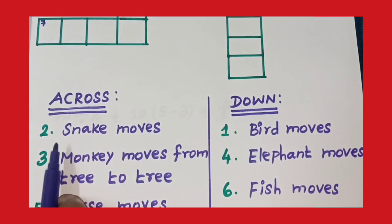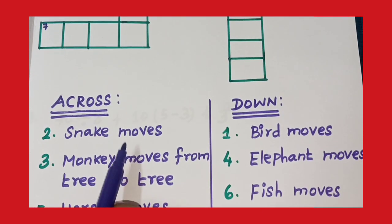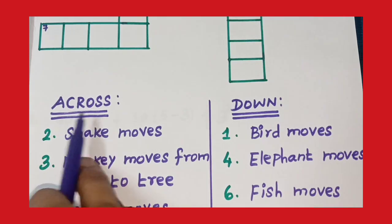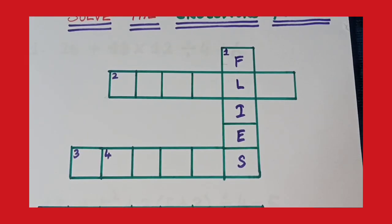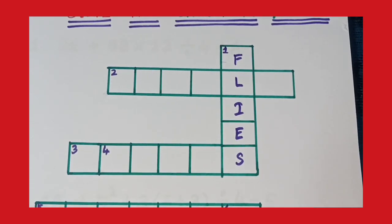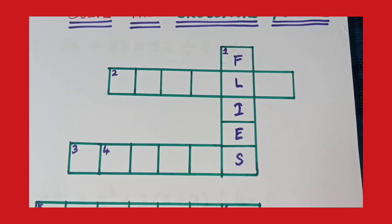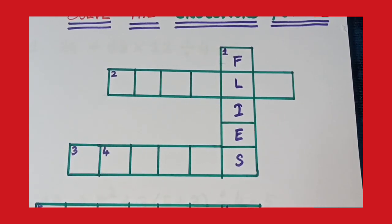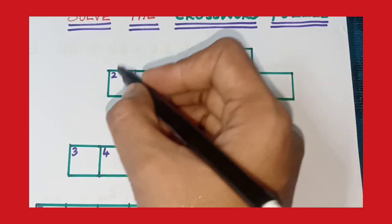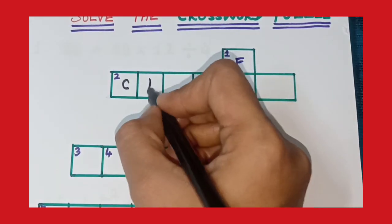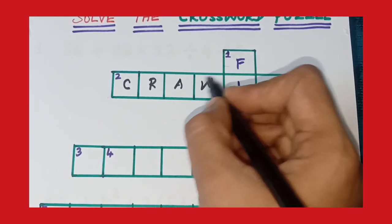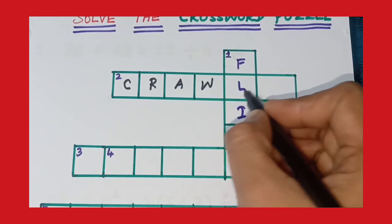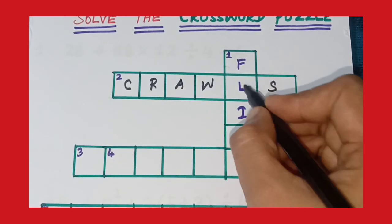Second one, snake moves. The clue for across. Snake moves, crawls. C-R-A-W-L-S. Crawls.